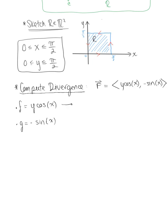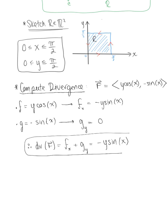And we're computing the divergence here, so we need the partial derivative of f with respect to x, which is just -y sin(x). And we also need the partial derivative of g with respect to y, which is 0. So therefore, the divergence of this vector field, which is the partial derivative of f with respect to x plus the partial derivative of g with respect to y, is just -y sin(x). And so we have everything we need. We've got our bounds, we've got the divergence.